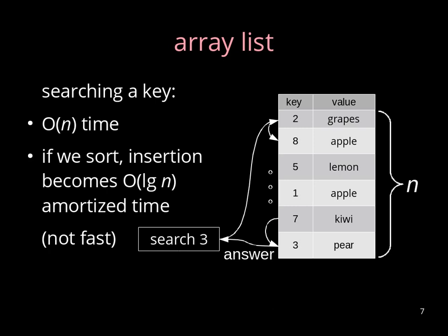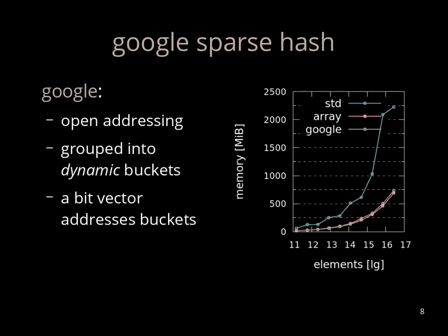Here we want to focus on constant expected time with low memory footprints. One solution is proposed by Google, which is called Google's sparse hash. It's an open addressing hash table where the hash table is grouped into dynamic buckets and a bit vector addresses the buckets. And you can see that this solution is very competitive to array.